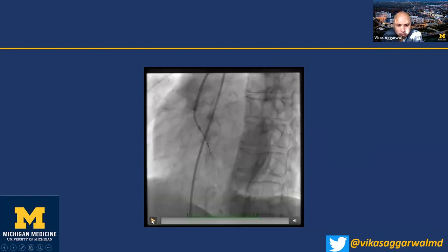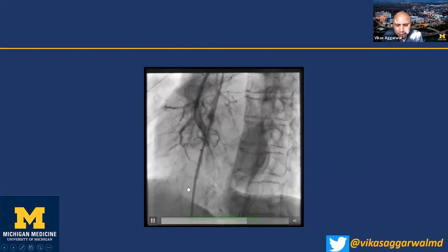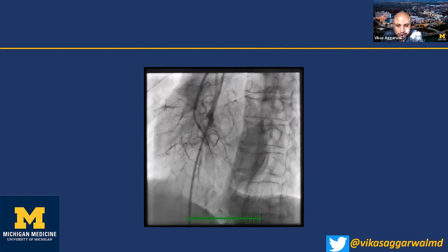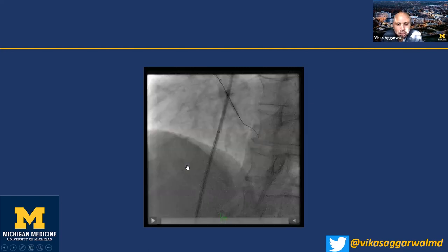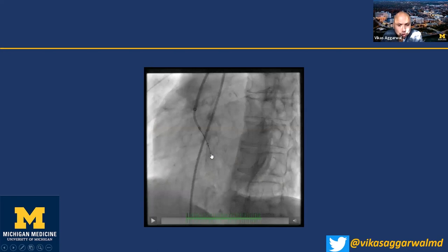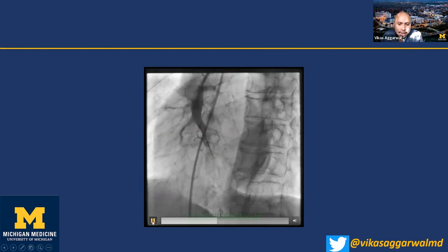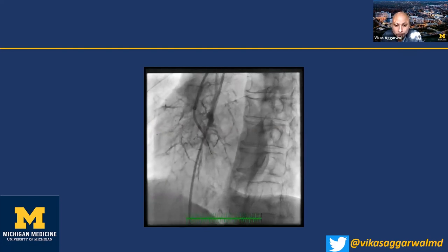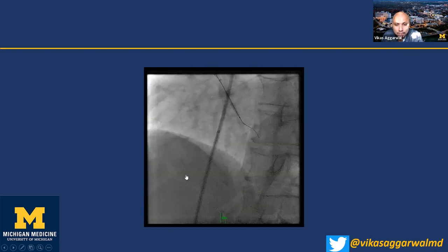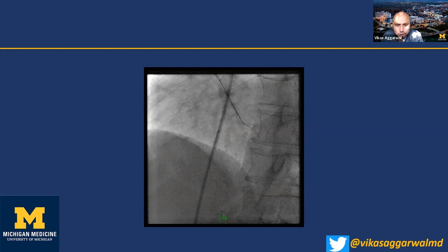I magnify out to 32 to get an idea of the landscape, and then the workhorse wire won't go any further. I switch to the Sion Blue, then a Fielder XT thinking I might find a micro channel. The Fielder XT flew by and went down, taking a J-course when I pulled it back — so I thought I was in a blood vessel. I took a puff with the microcatheter and dilated with a 2.0 balloon, then pulled back and dilated the proximal part.